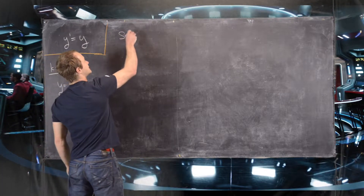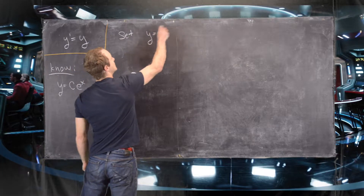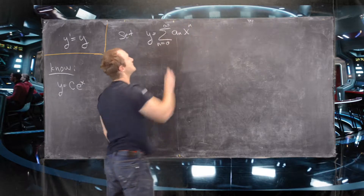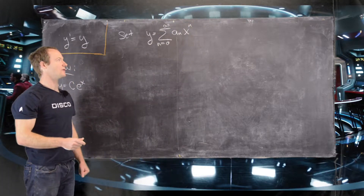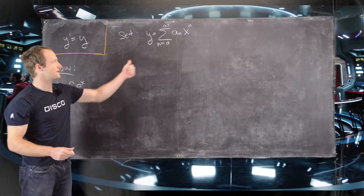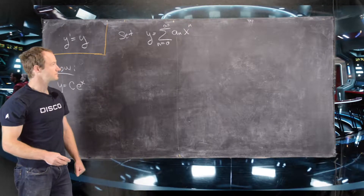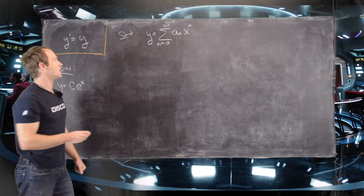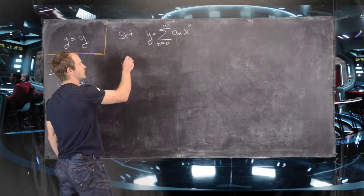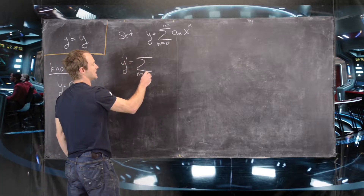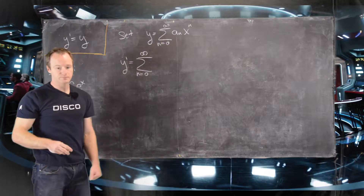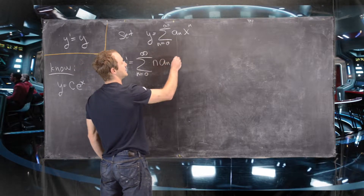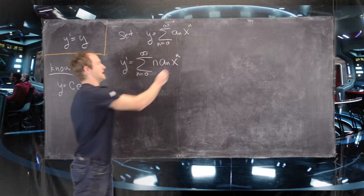We start by setting y equal to the sum n equals 0 to infinity of a sub n times x to the n. So we're taking a series solution based around x equals 0 — a power series based at x equals 0. From here we can do term by term differentiation on y, so that gives us y prime equals the sum n equals 0 to infinity, and then we use the power rule, giving us n times a sub n times x to the n minus 1.